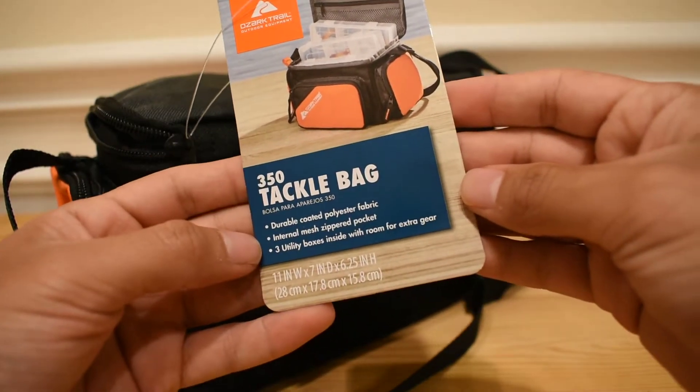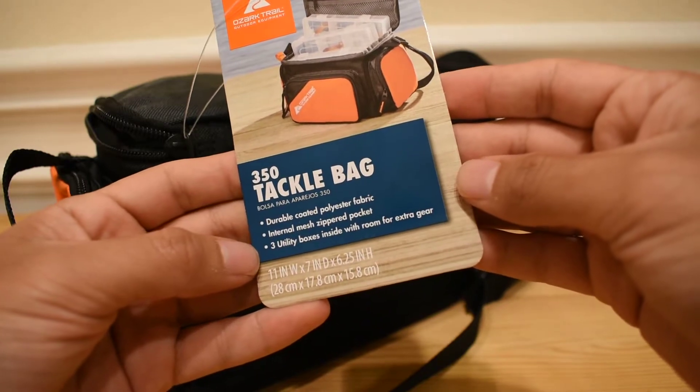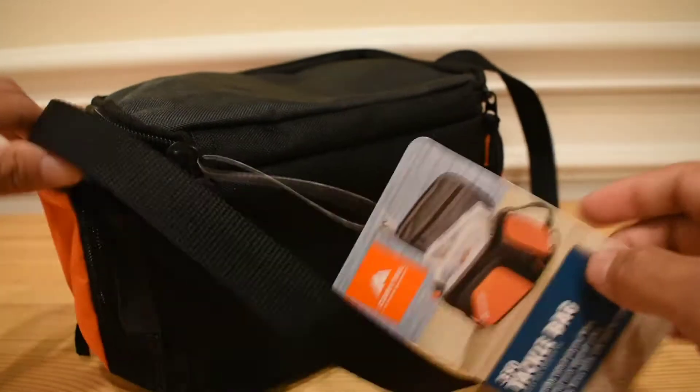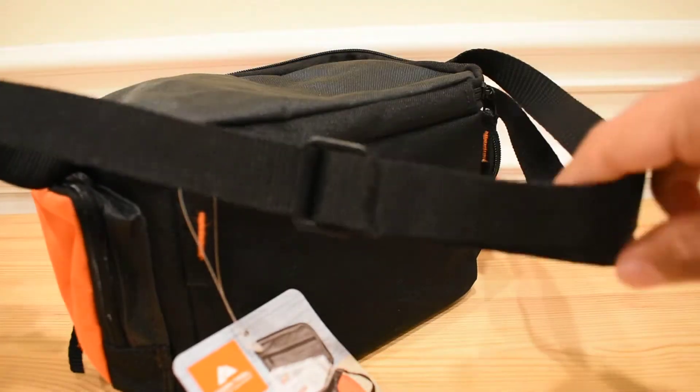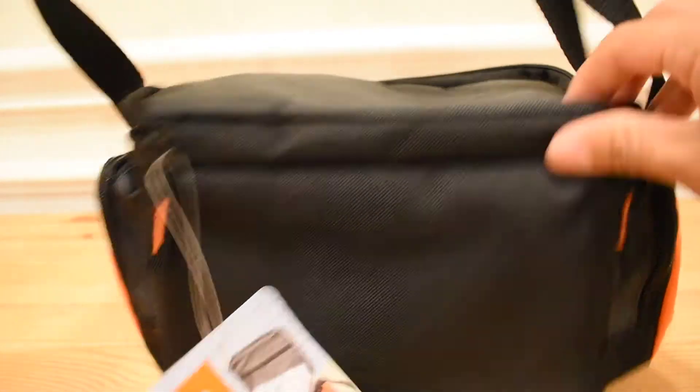Durable coated fabric, internal mesh pocket, three boxes inside for extra gear. We're going to start on the outside. You have this handle which is adjustable. You can make it real long or you can make it shorter, however you like.